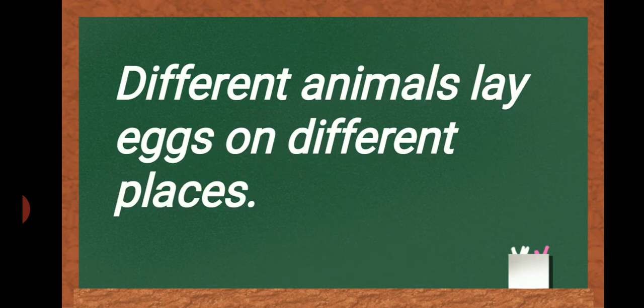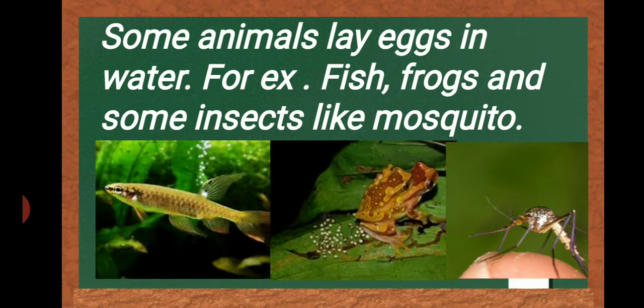Different animals lay eggs on different places. Some of the animals lay eggs in water, like fish, frogs, and some insects like mosquito. These animals lay eggs in water.